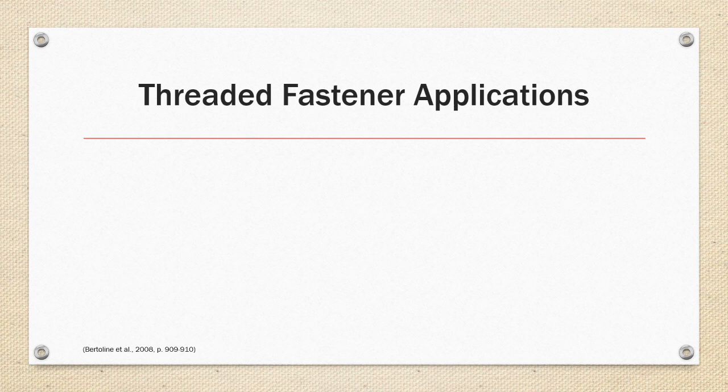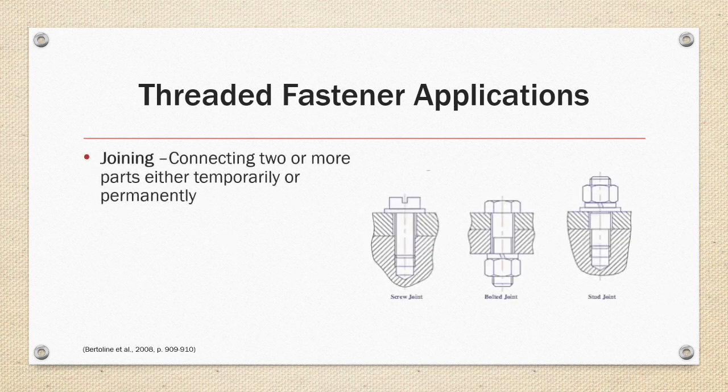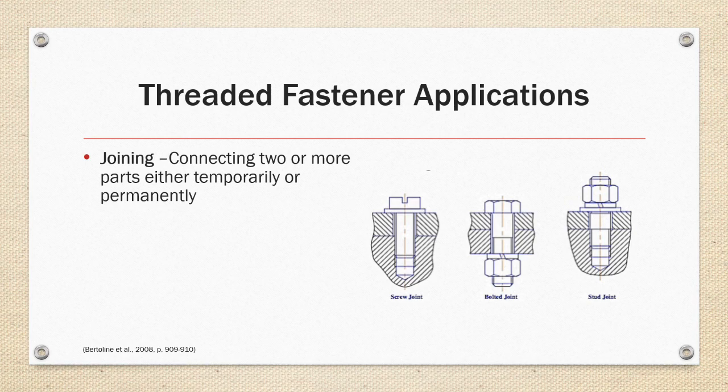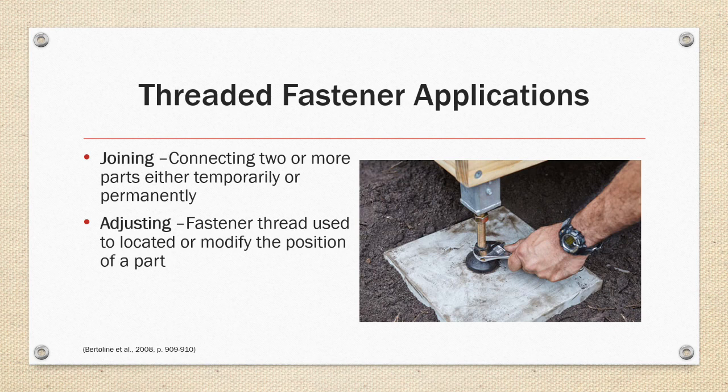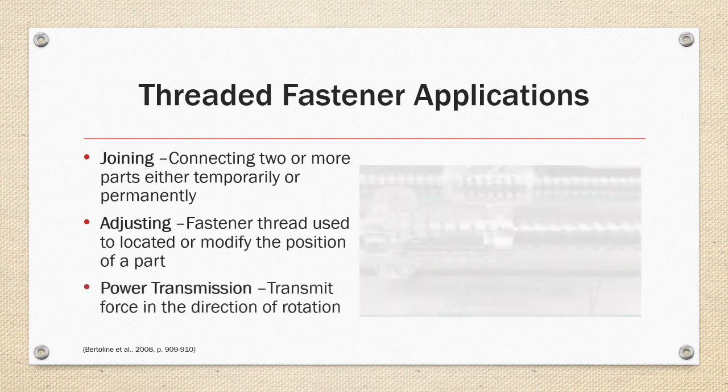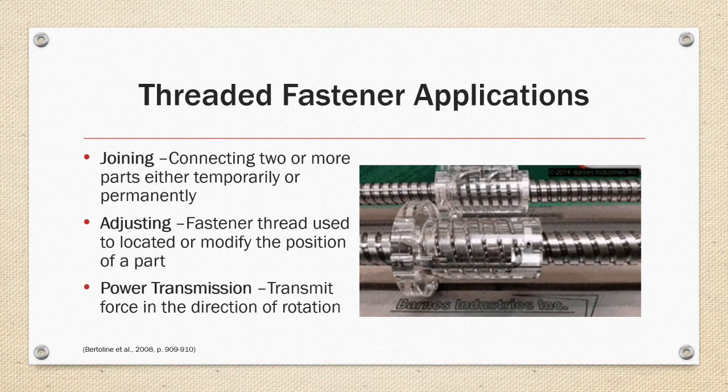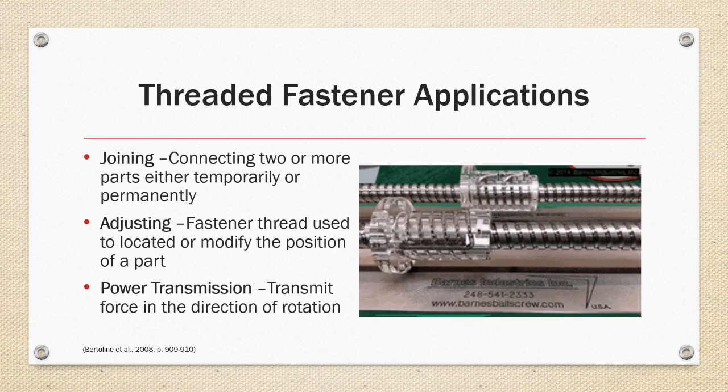Thread Fastener Applications. Joining is connecting two or more parts together temporarily or permanently. Adjusting fastener thread is used to locate or modify the position of a part. Or Power Transmission to transmit force in the direction of rotation.